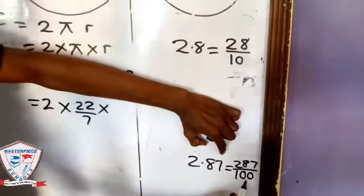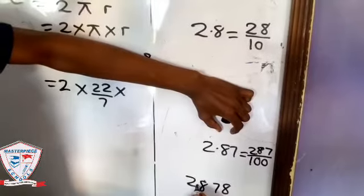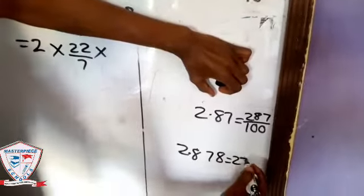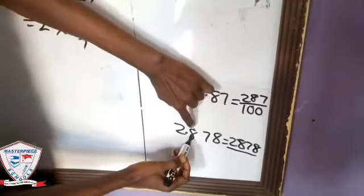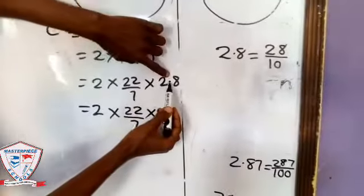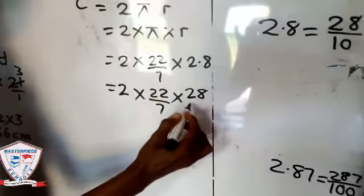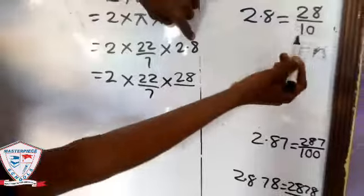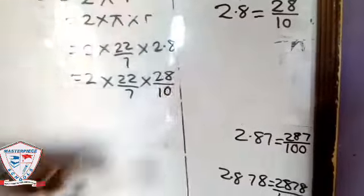Look at how many numbers after the decimal point - that's two, so you divide by 100. If it is three numbers, 2.878, just write that same number 2878 over - how many numbers after decimal point? One, two, three - so you divide by 1000. But for this one it is just 2.8, how many numbers after decimal point? One. So just write your 28 over 10.